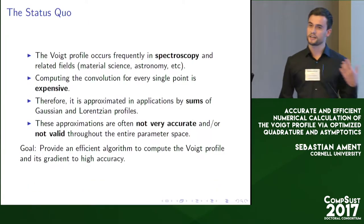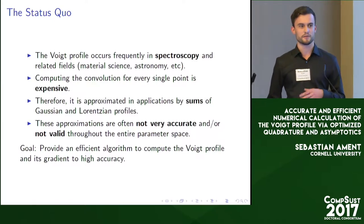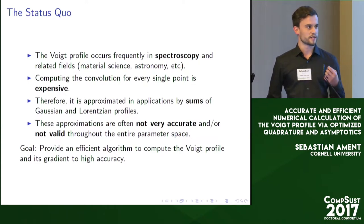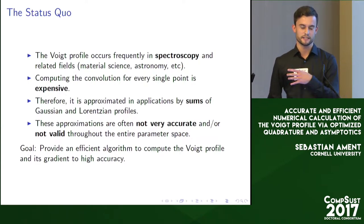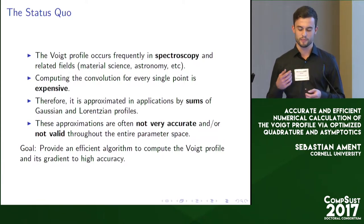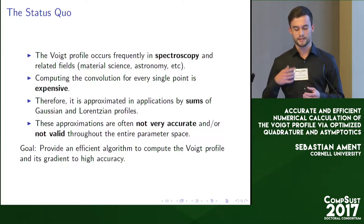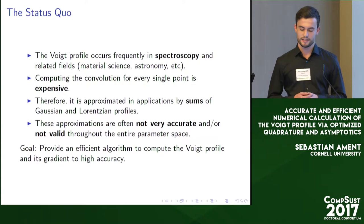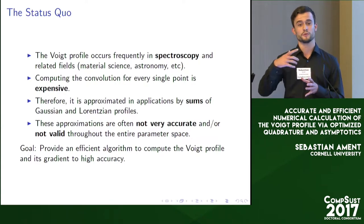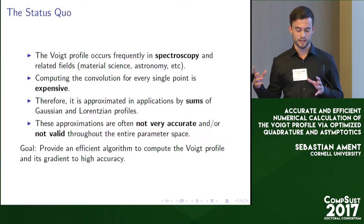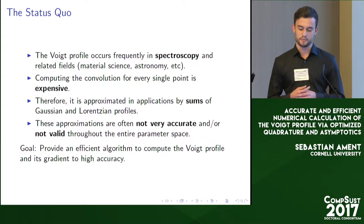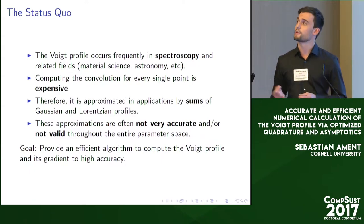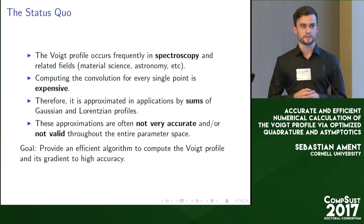So why do we care about this? Well, in spectroscopy and related fields, this shape occurs very naturally. For example, in material science, in the spectrograms that Junwin was just talking about, the diffraction peaks are theoretically modeled by this Voigt shape. However, in applications, this is very expensive to compute because for each point on the Voigt profile, you'd have to convolute two functions and do this integral every single time.